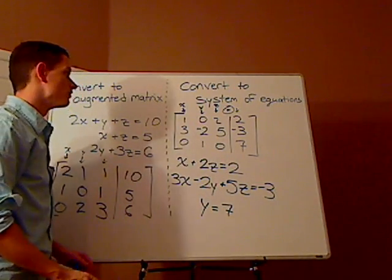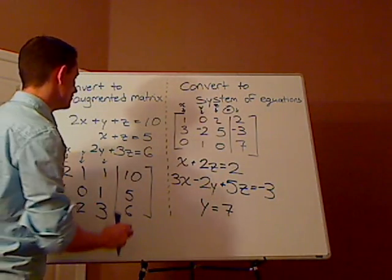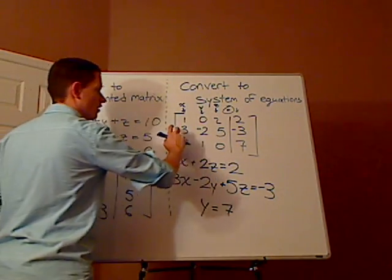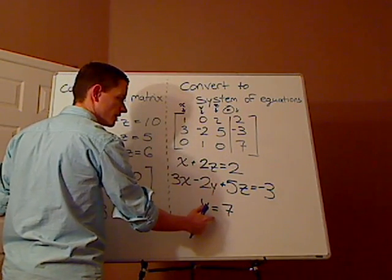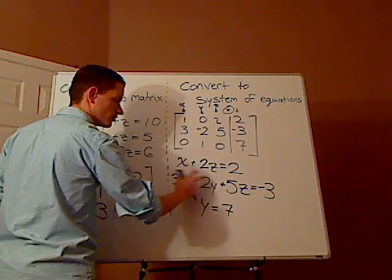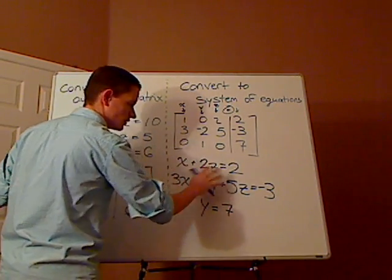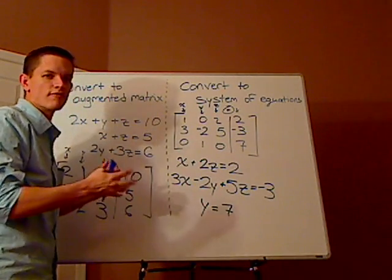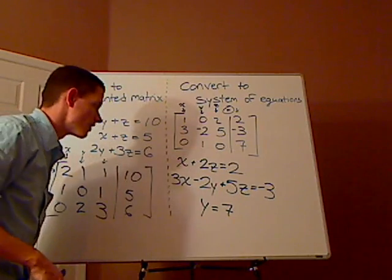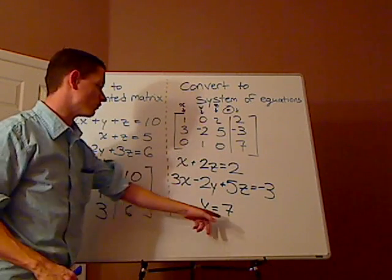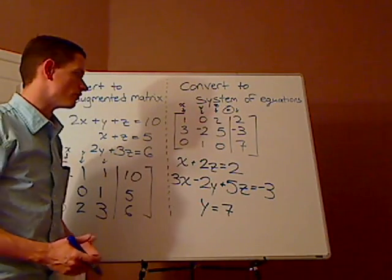And that's it. Now what you can do if you're trying to solve a matrix, you can just take this augmented matrix and convert to this. Once you convert to this, then you can solve the system of equations. Because then you can just do substitution, and then you can do elimination and substitution or whatever to solve for, in here, you just have to solve for x and z, because you already know y. So that's it.